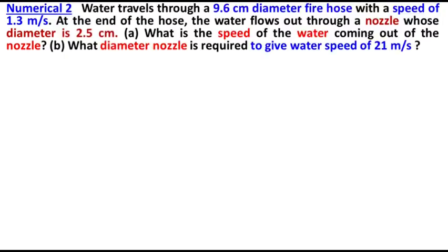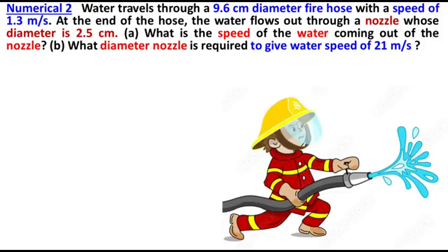Numerical two. Water travels through a 9.6 centimeter diameter fire hose with a speed of 1.3 meters per second. This is a firefighter with a fire fighting hose. The water is passing through the hose—the diameter is 9.6 centimeters, and the speed is 1.3 meters per second.